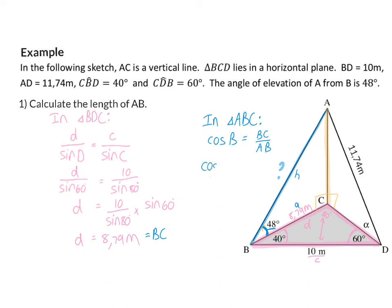Once again, we can substitute in what we know. So cos of 48 degrees is equal to 8.79 over AB.